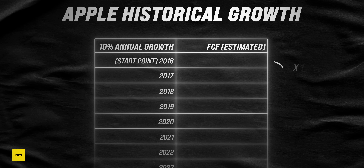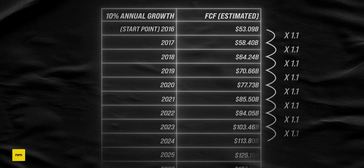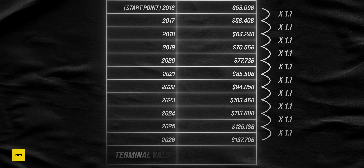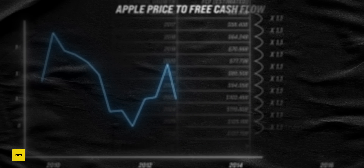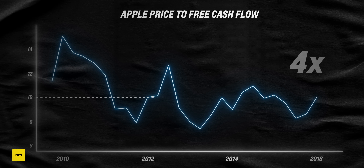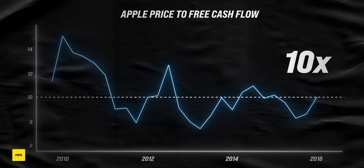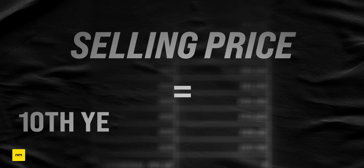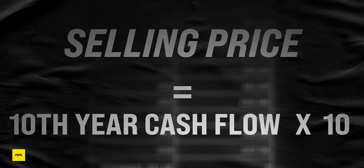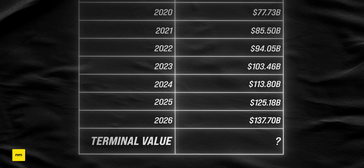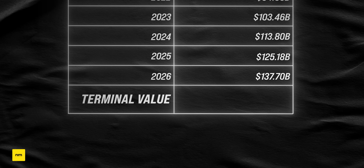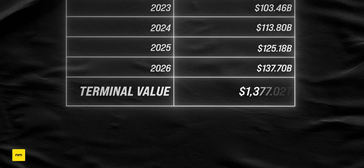From there, the next step is to grow the free cash flow by our 10% growth rate for the next 10 years. We also have to figure out a terminal value — what we're likely going to be able to sell the whole company for in 10 years time. Around 2016, the price-to-free-cash-flow multiple that Apple had been selling at for quite a few years was about 10. So we take the 10th year of free cash flow and multiply it by 10. At year 10, we estimated Apple's free cash flow would be $137.7 billion, so selling at 10 times free cash flow gives a terminal value of $1.377 trillion.